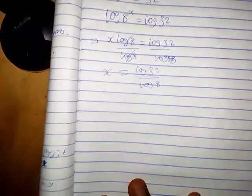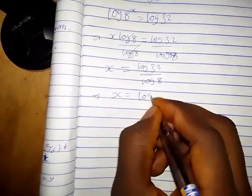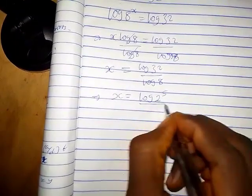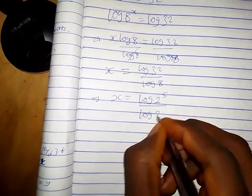This implies that x equals log 32, which can be written as 2 raised to the power 5, over logarithm of 8, which can also be written as 2 raised to the power 3.